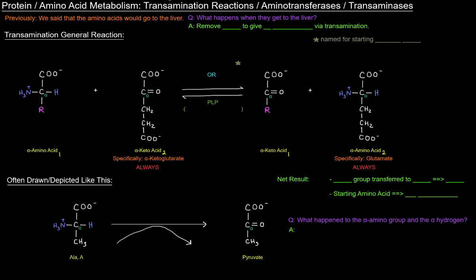Previously we mentioned that a protein would be digested into a bunch of amino acids and taken up from the intestinal lumen into the blood and eventually taken to the liver. So what happens to them when they get to the liver?